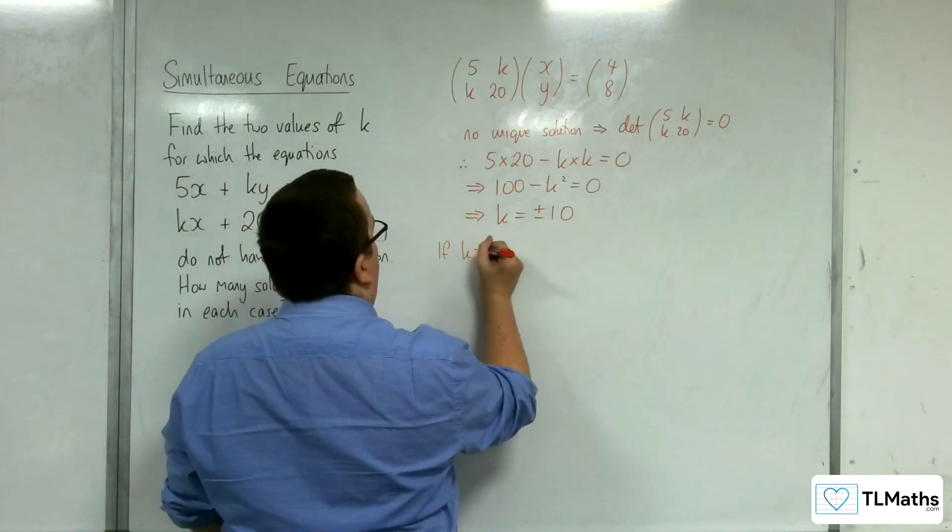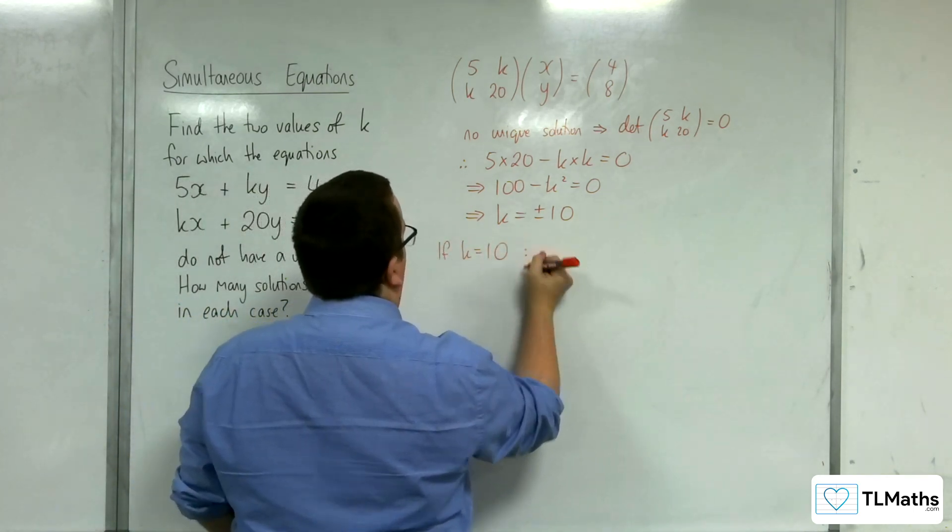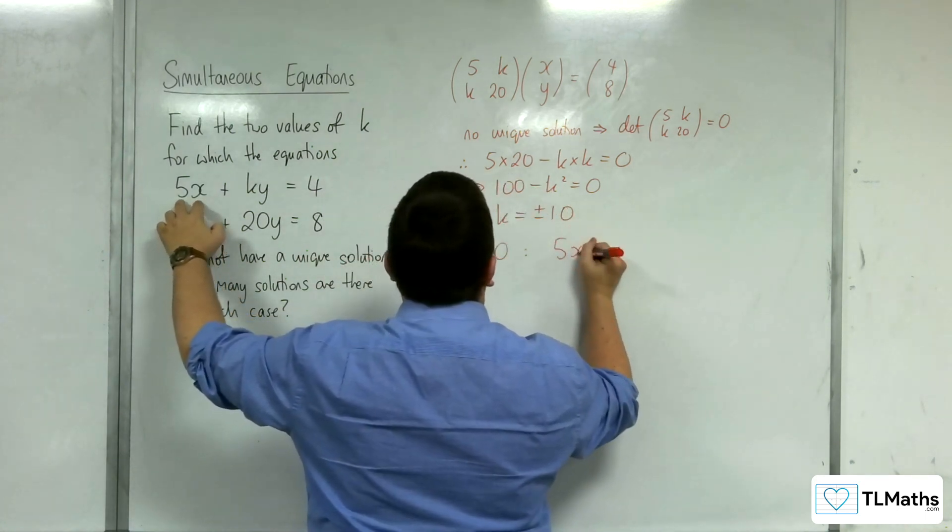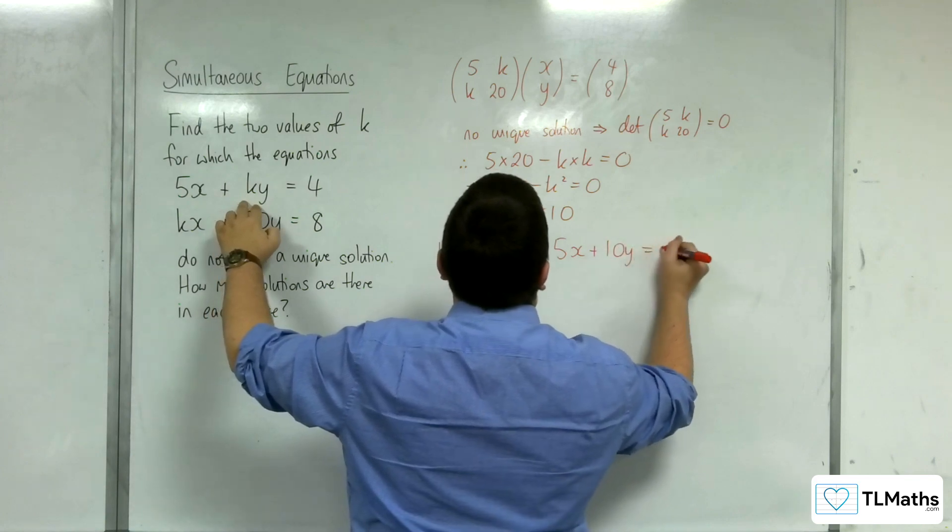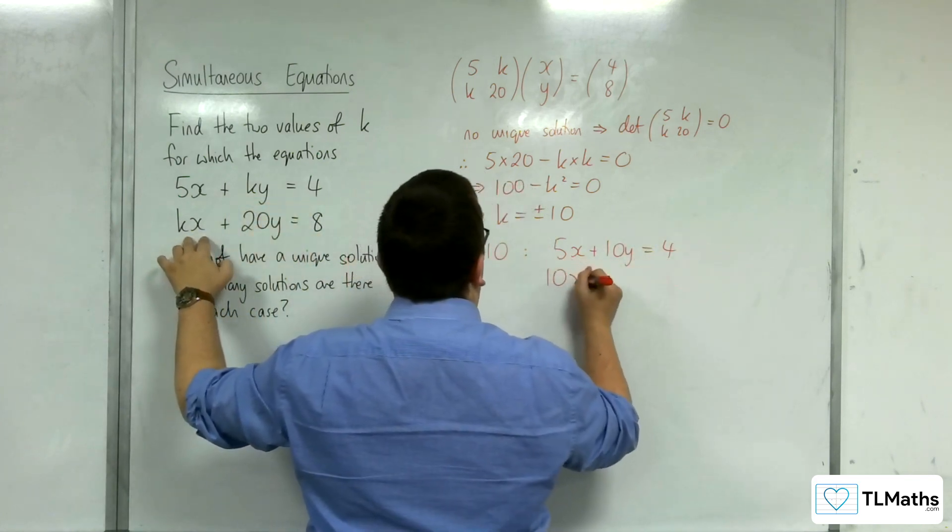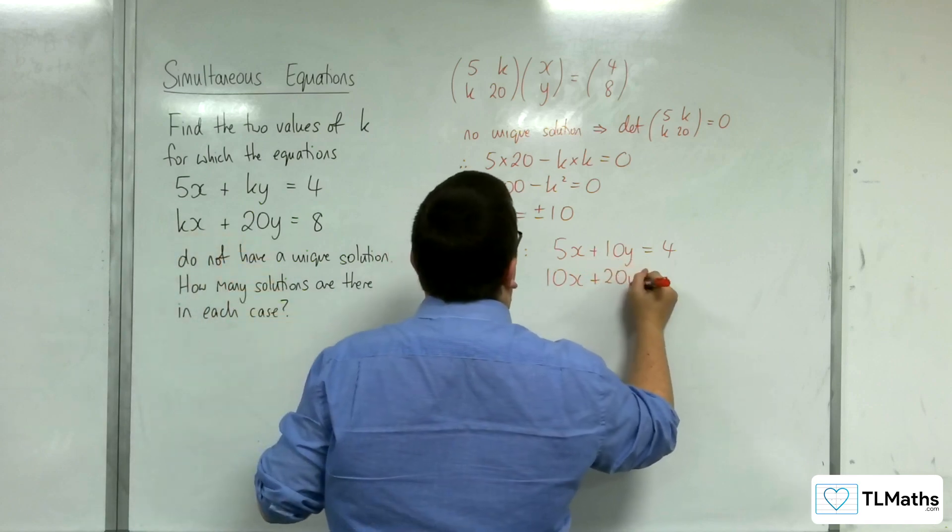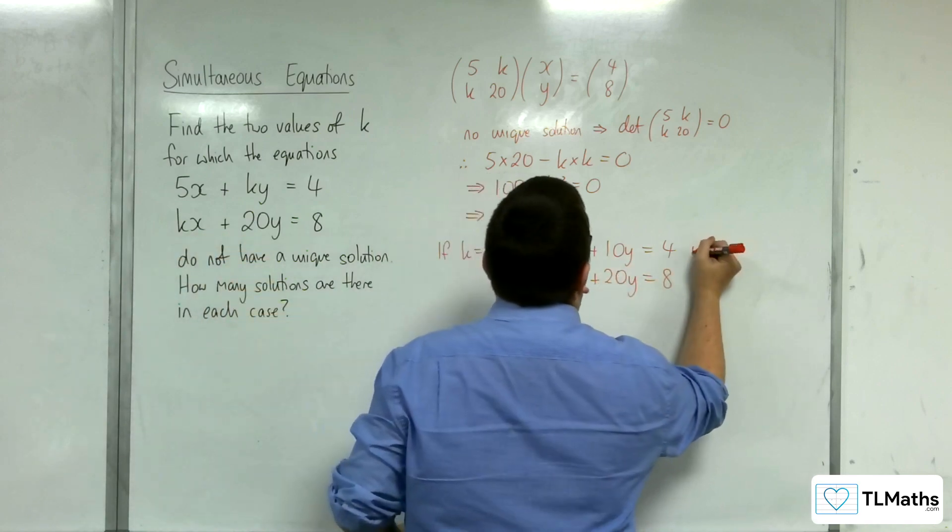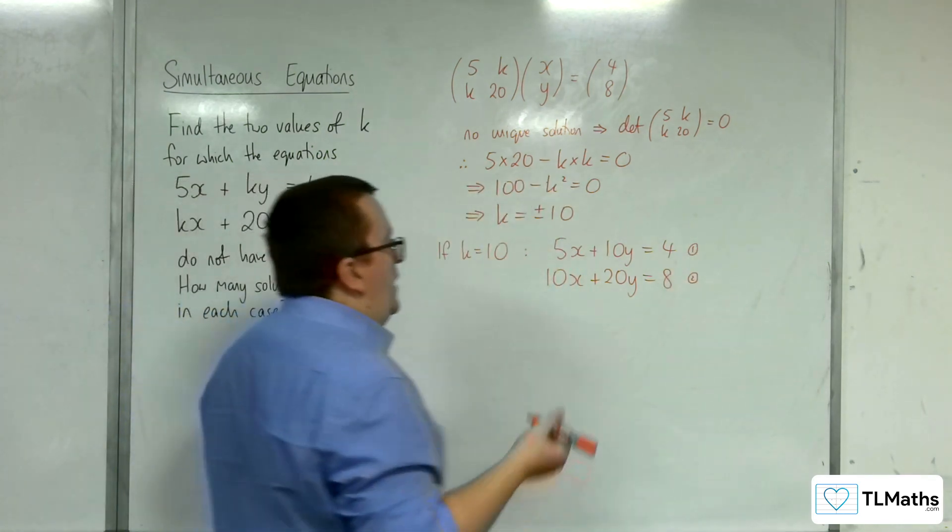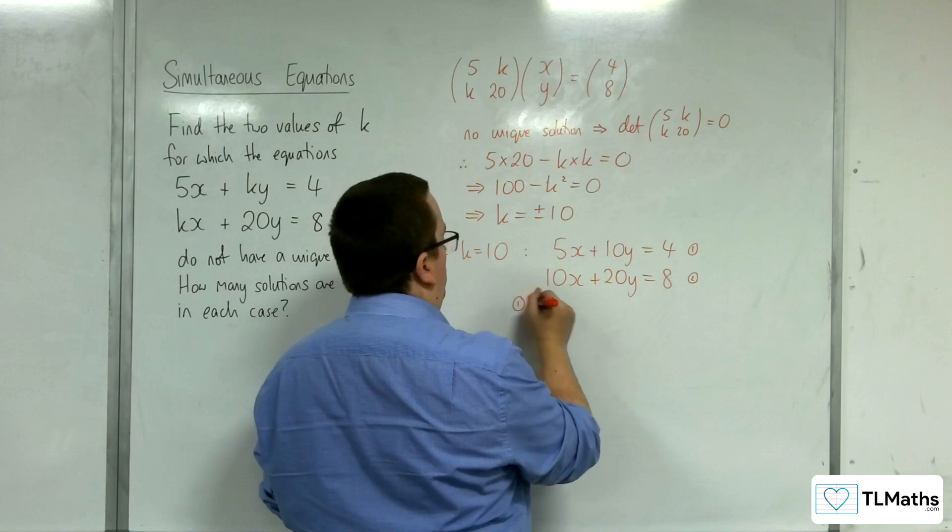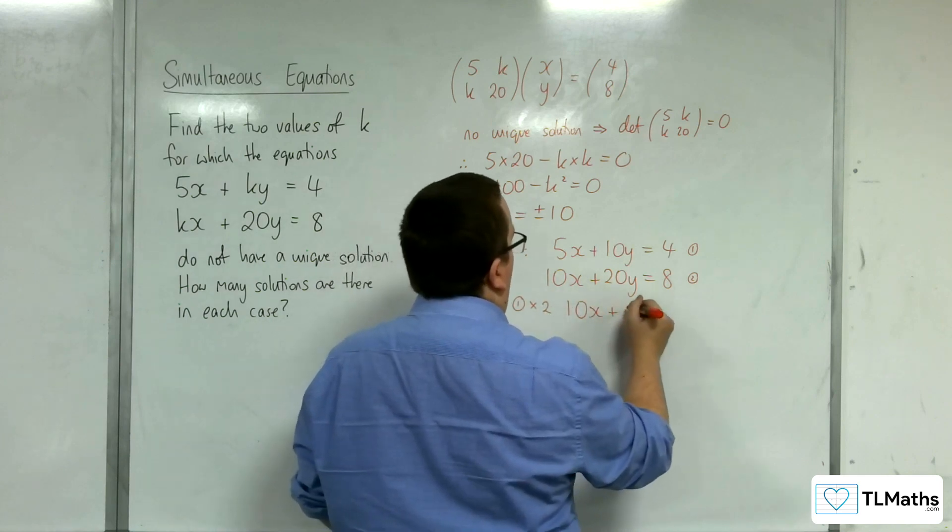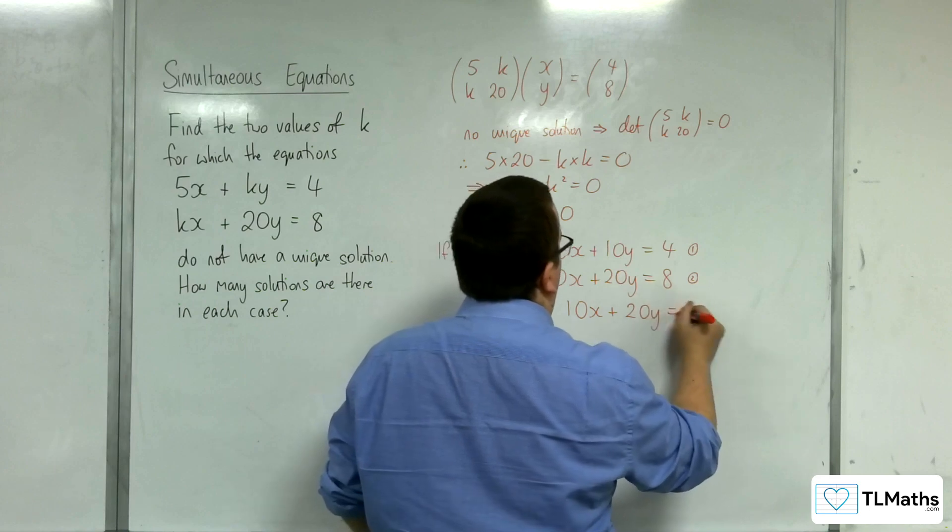So if k equals 10, then the two equations that I would have are 5x plus 10y is equal to 4, and this equation is 10x plus 20y is equal to 8. Now, if we call the equations equation 1 equation 2, if I were to multiply equation 1 by 2, I would get 10x plus 20y is equal to 8.